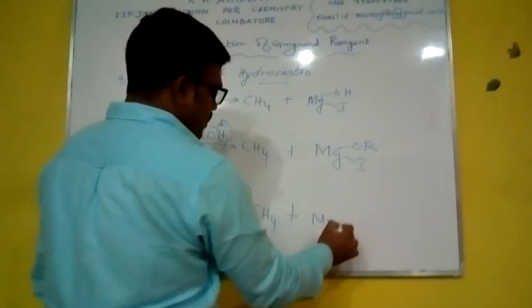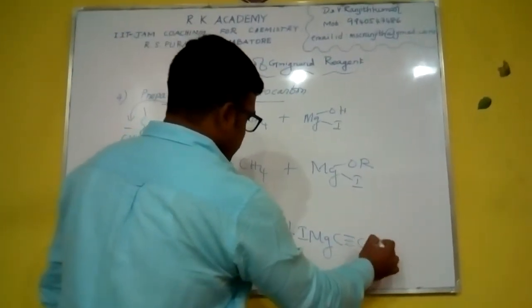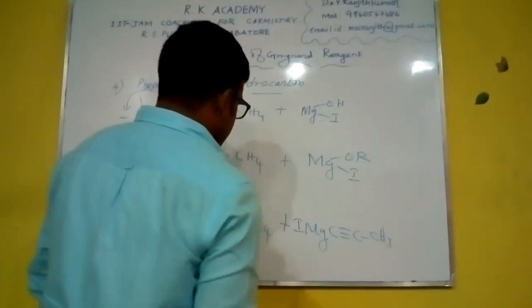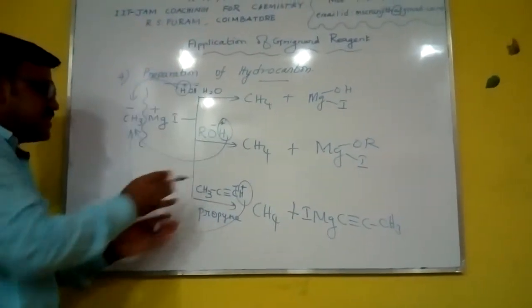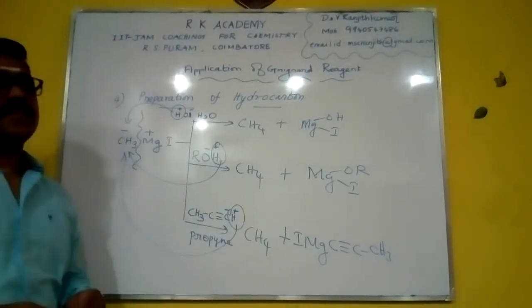The last one is MgI-C≡C-R. So all these solvents give hydrocarbon. That's why we cannot keep them stable in ether solvent.